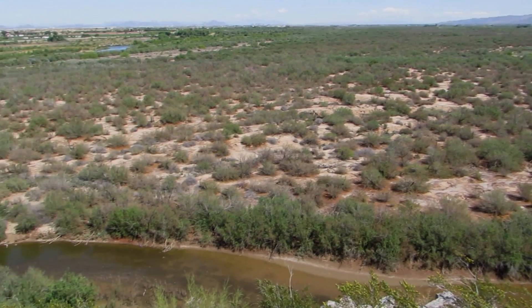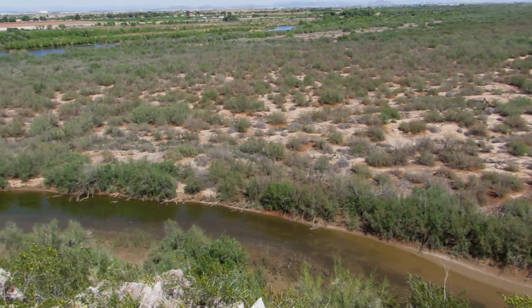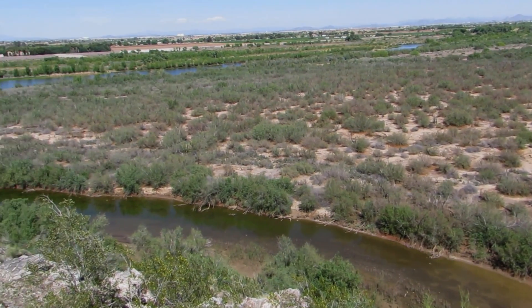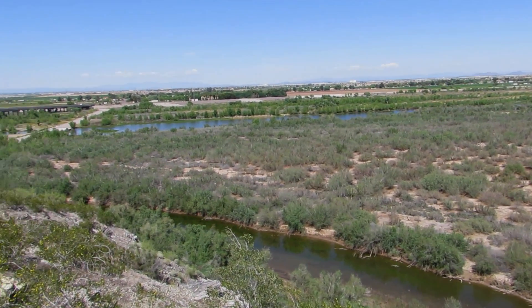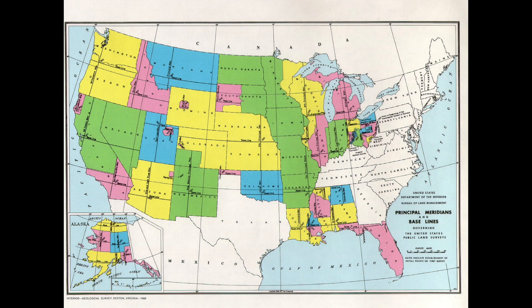Monument Hill would later be used by John Clark in 1865 to establish the Township and Range grid system for the state of Arizona, officially known as the Public Land Survey System, used throughout the western part of the United States.